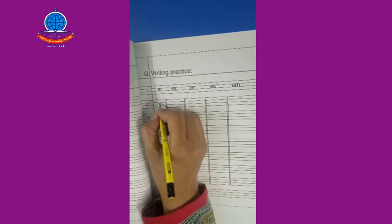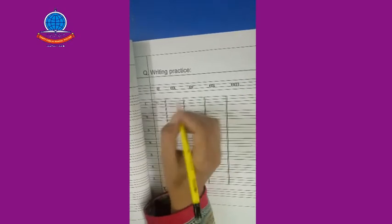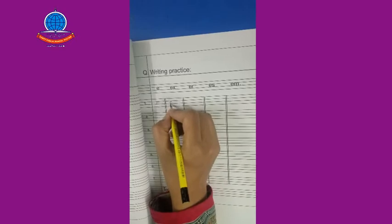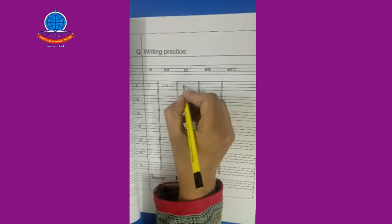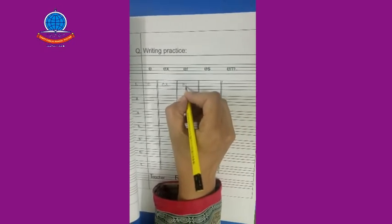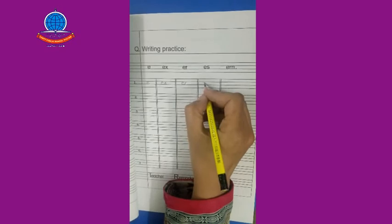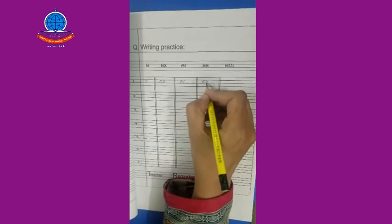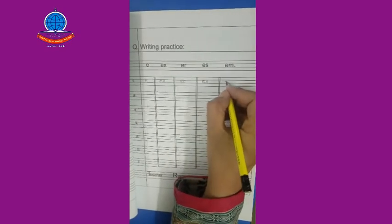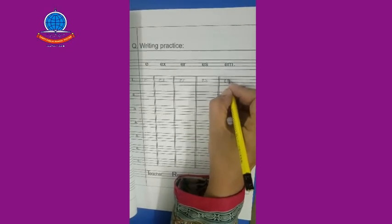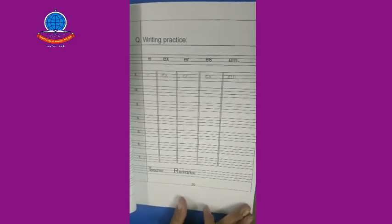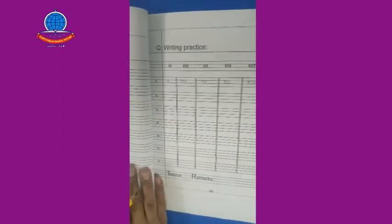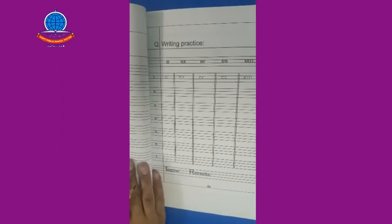On page number 50 we have a question: writing practice. We will write 'e' like this. The next letters are e-x-e-r. You have to write here and practice. On page number 51 — hope you understand my lecture. See you next time in the next video. Allah hafiz.